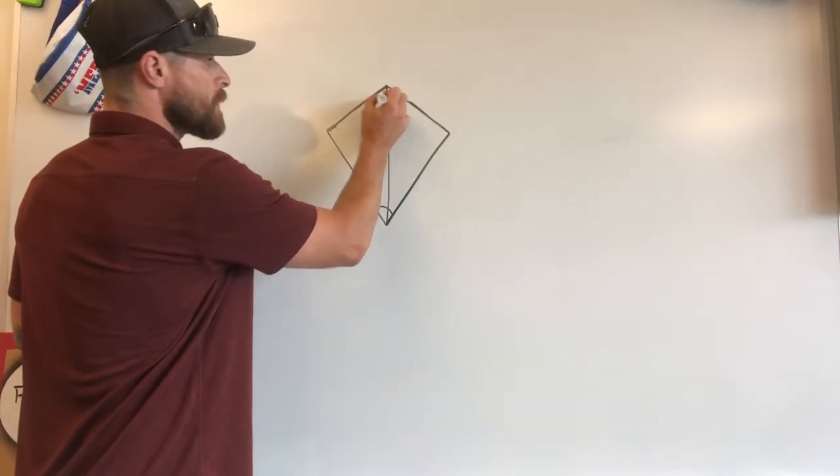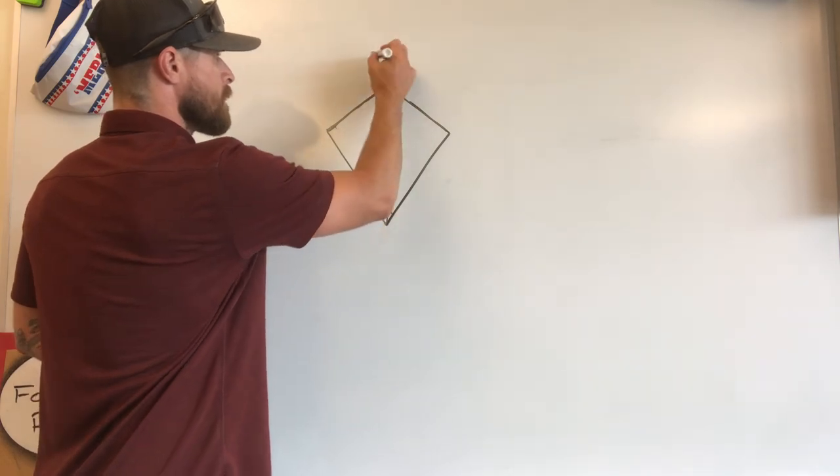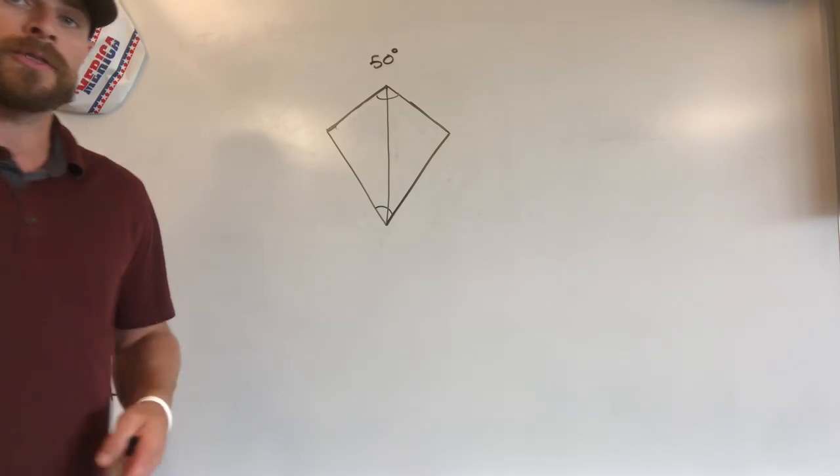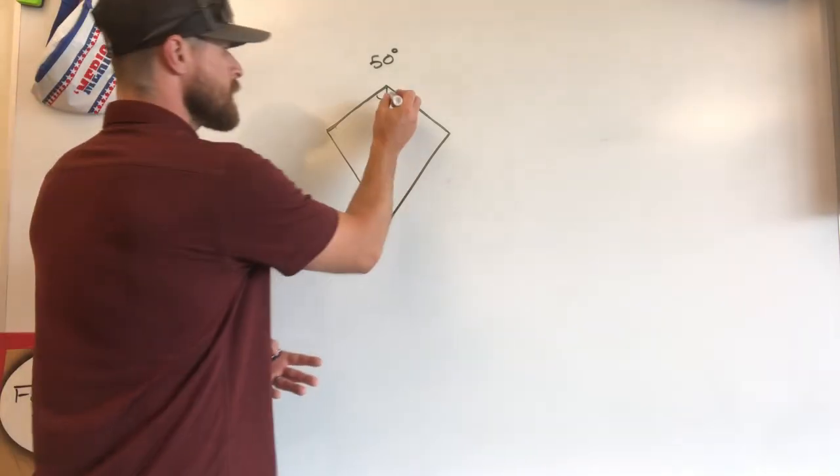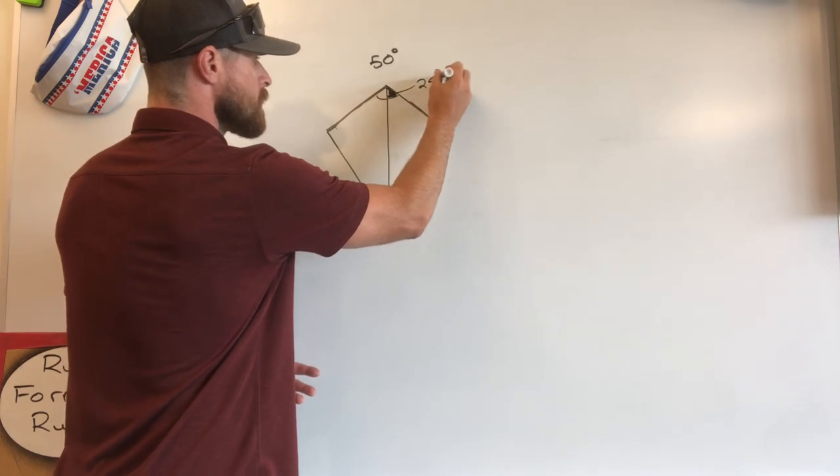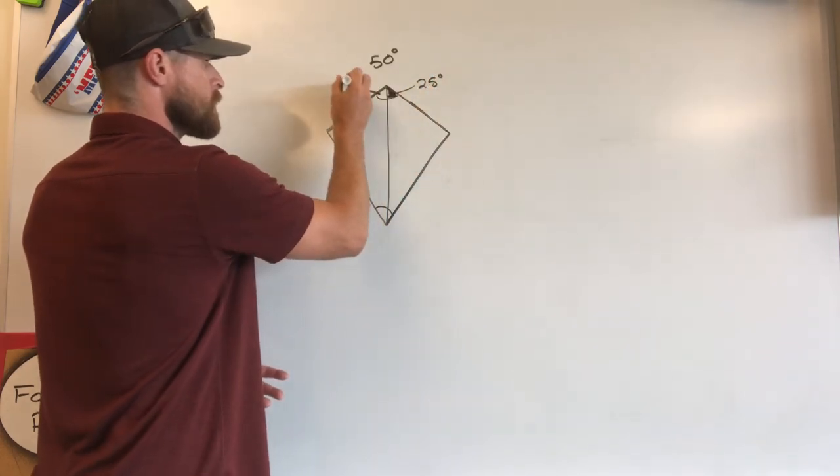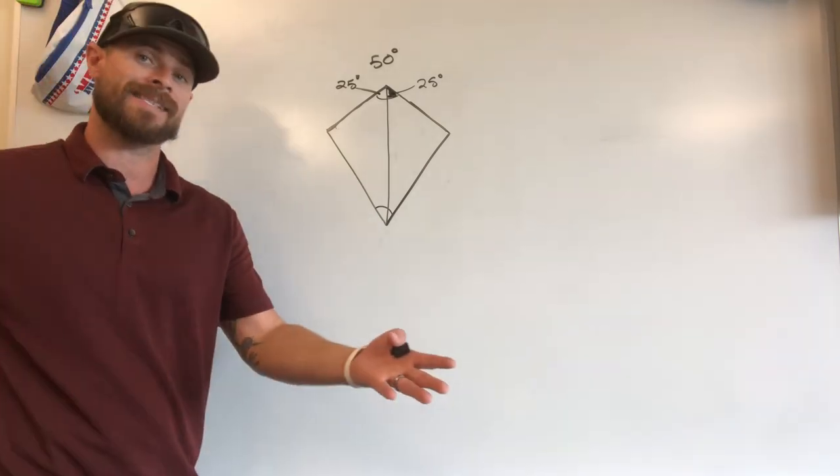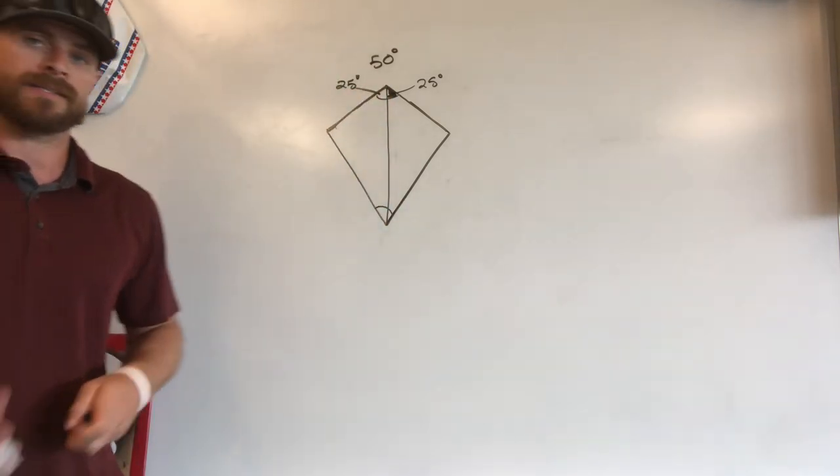Meaning if the overall angle up here was, let's say, 50 degrees, now that I've drawn a diagonal going through the two vertex angles, each one of those now, that one is now 25 degrees. And this one over here would also be 25 degrees. Because again, it is an angle bisector of that vertex angle.